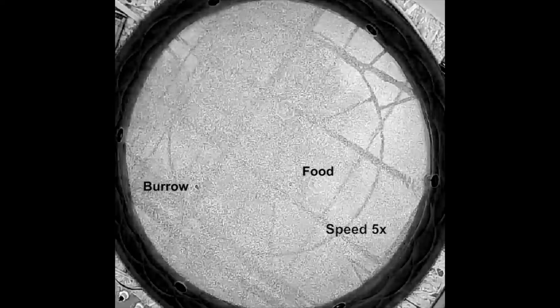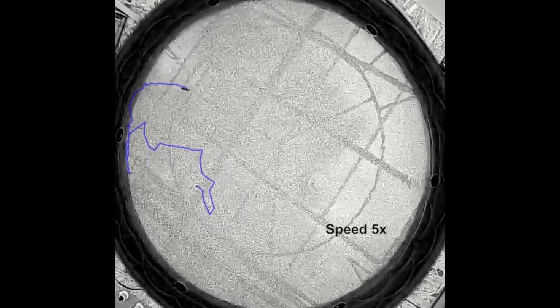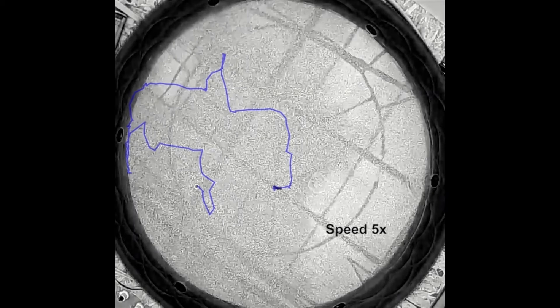To begin to investigate the navigational abilities of mantis shrimp, I built large semi-natural arenas with a hidden burrow and food placed in a few fixed locations in the arena. We found that mantis shrimp would leave their homes, making fairly tortuous paths to the location of the food placed in the arena.